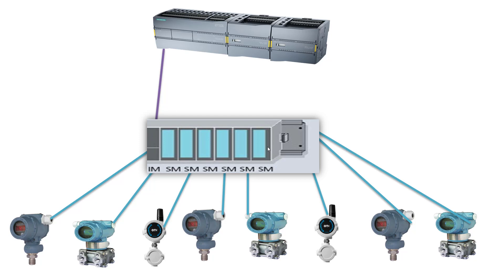But there is one issue with this kind of configuration. If the RS485 PROFIBUS cable fails, what is going to happen? We will lose all data — not only from one instrument but from all instruments. To address this, there is a solution: you can use redundant IM modules and a redundant cable, so if one fails, the other can take over.